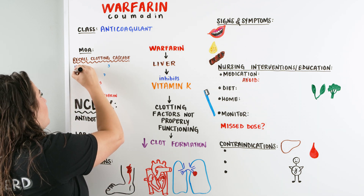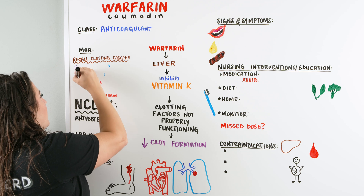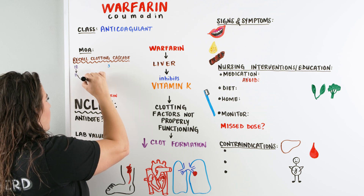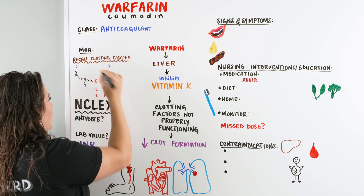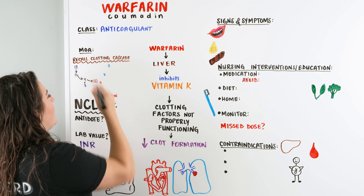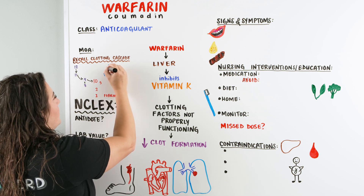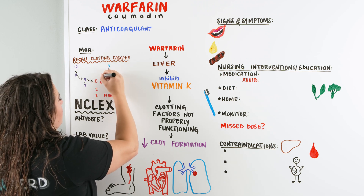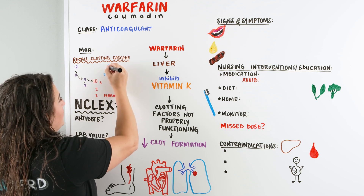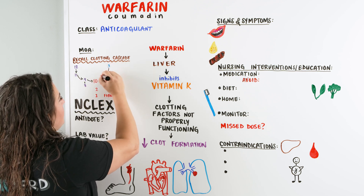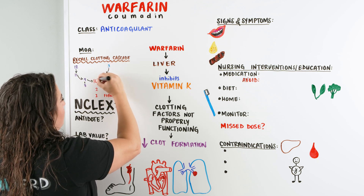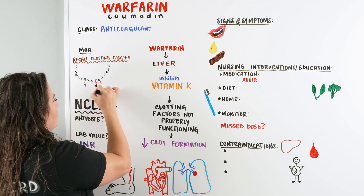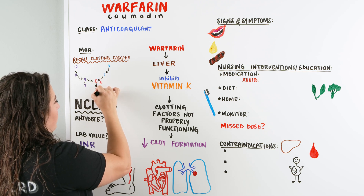In the intrinsic pathway, we have 12, that goes to 11, that goes to 9 plus 8, which goes to 10. And our extrinsic pathway goes 3 to 7 to 10. Then 10 plus 5 goes to 2, goes to 1, and then we have fibrin.